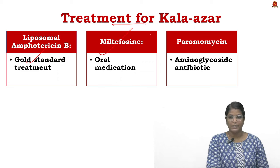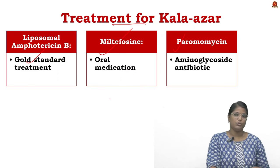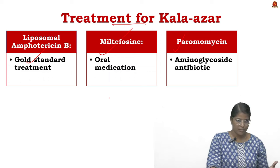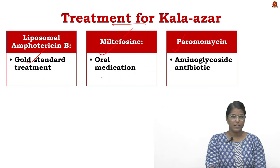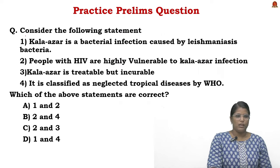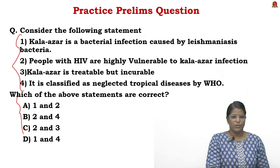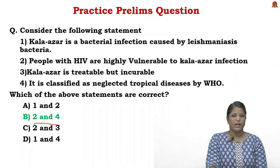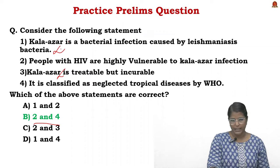Three anti-leishmanial drugs can be used to treat Kala Azar — the disease is treatable and preventable. For the prelims question on Kala Azar, the correct answer is Option B; the first and third statements are incorrect.